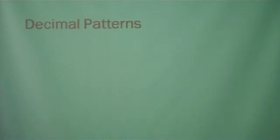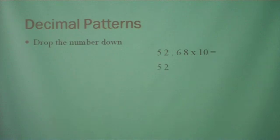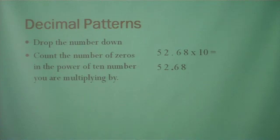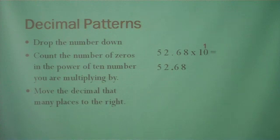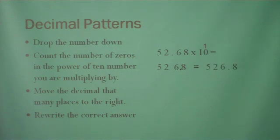Next, we're going to look at decimal patterns. These are just as easy. We're going to multiply 52.68 times 10. We're going to drop the original number down. Now we're going to count the number of zeros in our power of 10 number — which will be 10, 100, 1,000, 10,000, one of those numbers. We have one zero. Next, we're going to move our decimal one place to the right. We rewrite the correct answer with the decimal in the new spot: 526.8.